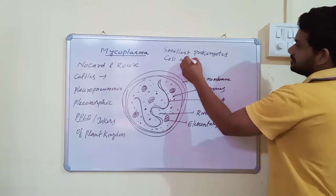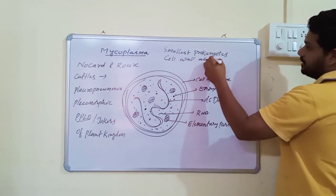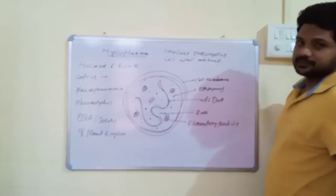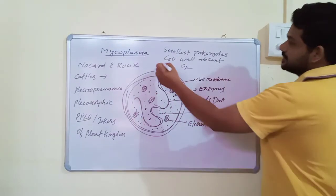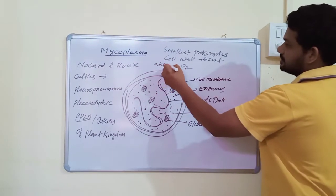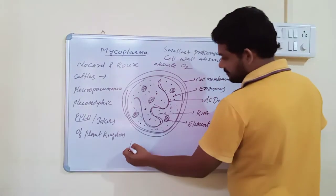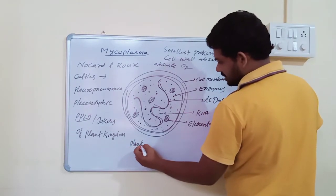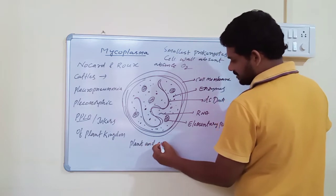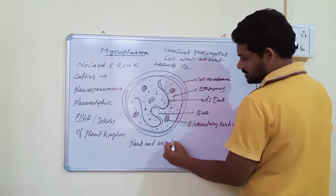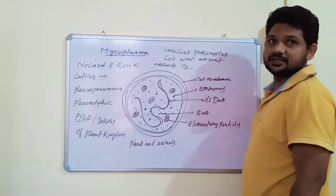Usually cell wall is absent. They can survive even in the absence of oxygen. They can cause diseases in both plants and animals.